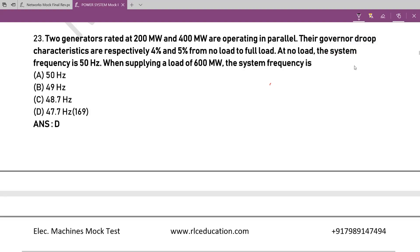We will discuss questions 23 to 27. These questions are primarily related to economics of generation and load frequency control. This topic appears in some PSC exams; for some PSCs like AP TRANSCO, load frequency control is not included. However, this concept of finding the final frequency of the system will be reflected in parallel operation of synchronous machines, so it is helpful to study now.